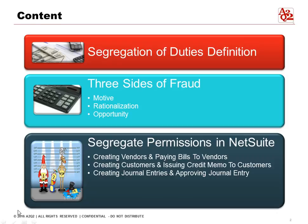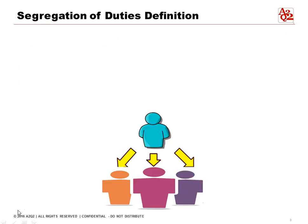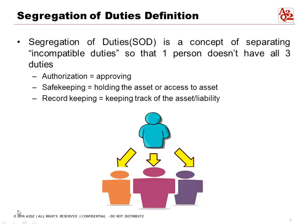Segregation of duties is the concept of separating incompatible duties so that one person doesn't have all duties. The three areas we're trying to separate are: authorization, which means approving transactions; safekeeping, which means holding the assets or access to the assets; and record-keeping, which means keeping track of the asset or the liability.